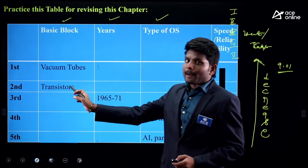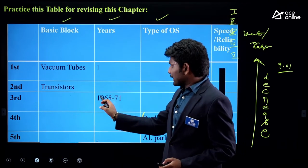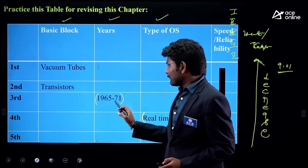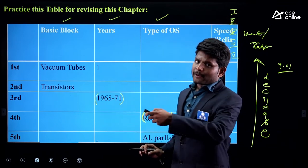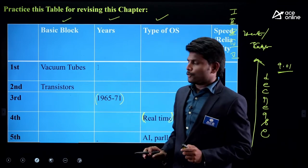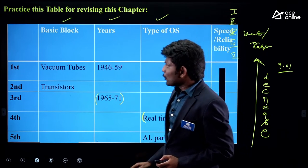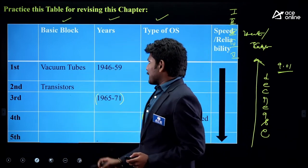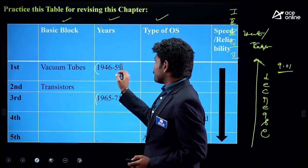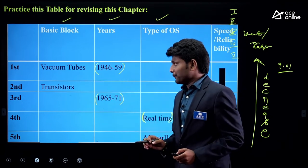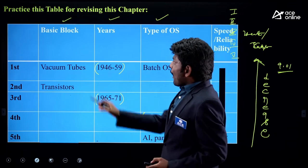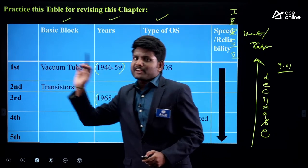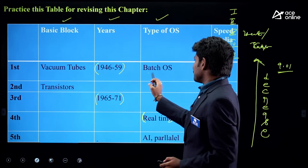They may ask: 'When were the third generation computers active?' — 1965 to 1971. Or 'When were the first generation computers active?' — From 1946 to 1959, first generation computers were active. 'What is the type of OS used in first generation computer?' — Batch OS.